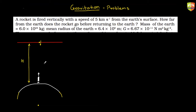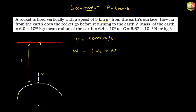From the surface — correct. Let's say velocity v is given as 5 km/s, so you need to convert to meters per second: 5000 m/s. We substitute into the expression: W = (U₂ + K₂) − (U₁ + K₁). Only gravitation is present for potential energy. W is zero, and K₂ is also zero.